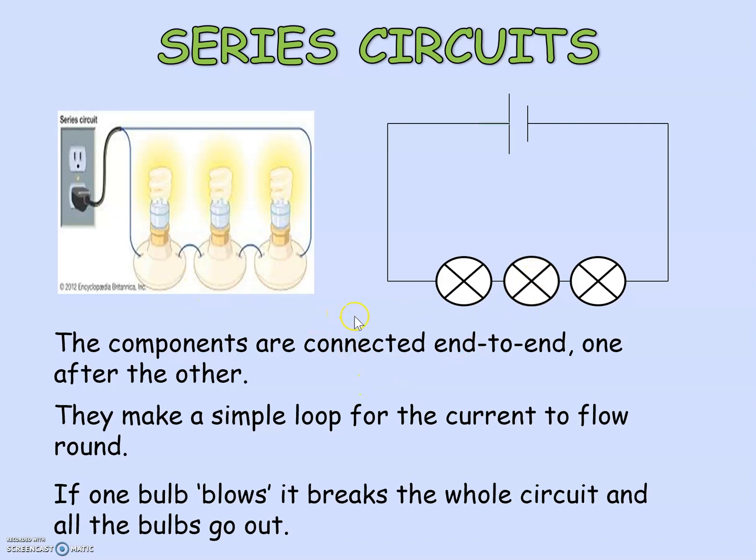The issue with a series circuit is that if we call the bulbs A, B, and C, if any of these bulbs was to stop working then the whole circuit will not work. So if bulb A goes out of action, then B and C will also go out of action. The circuit becomes an incomplete circuit because the current can no longer flow. That doesn't make it as useful in that sense, but they are simple to operate and use.